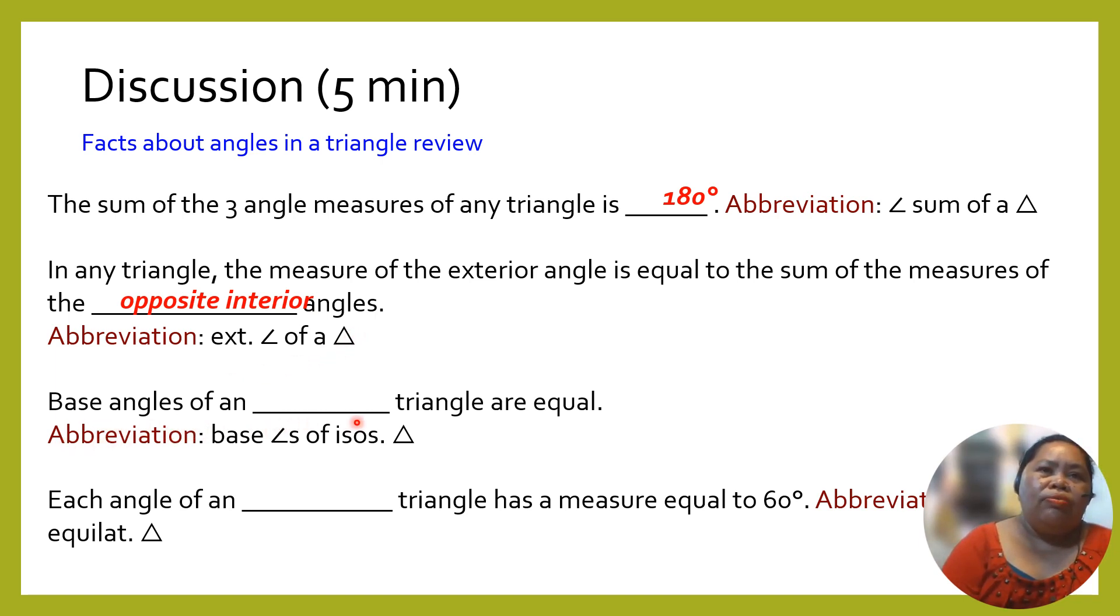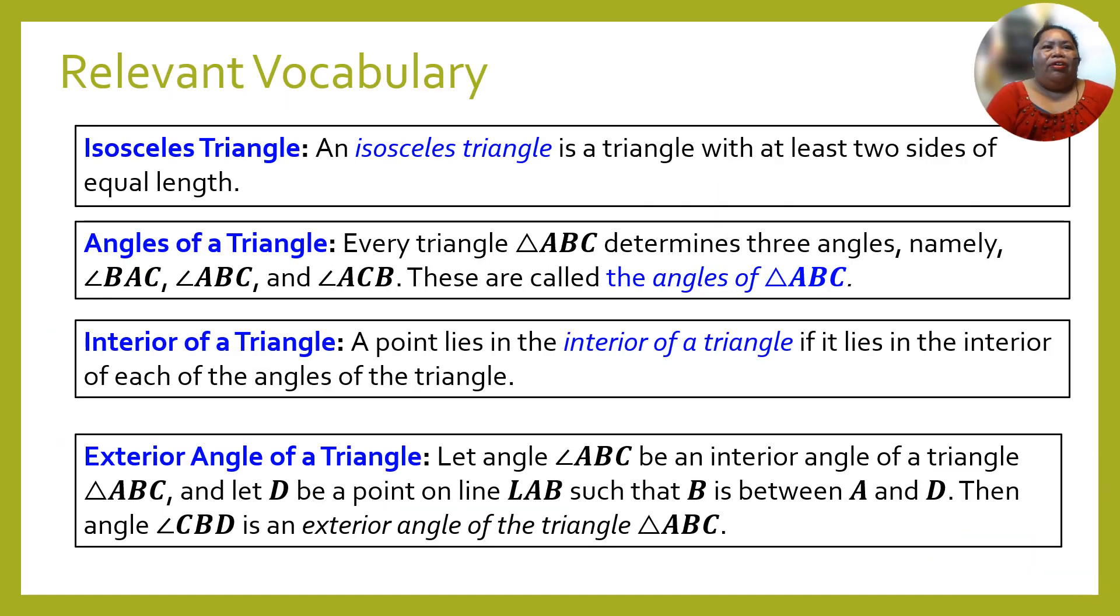Base angles of an isosceles triangle are equal. Each angle of an equilateral triangle has a measure equal to 60 degrees.